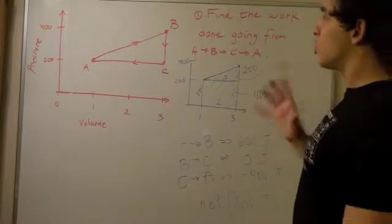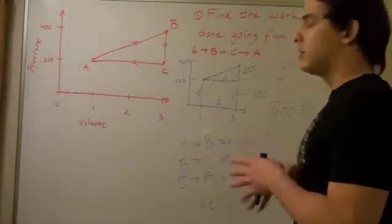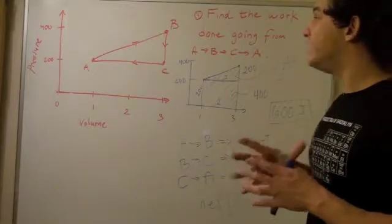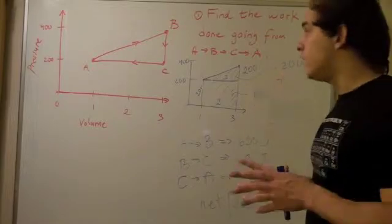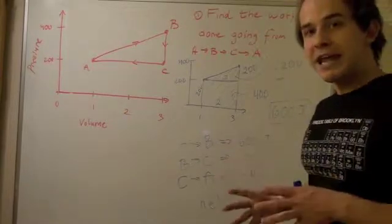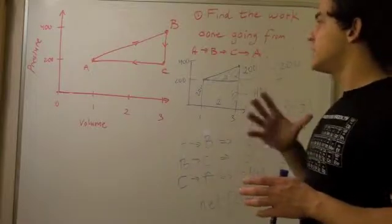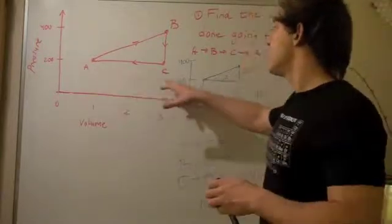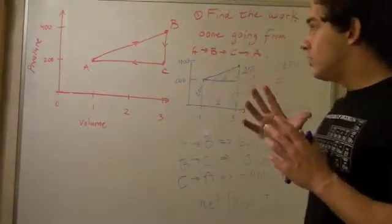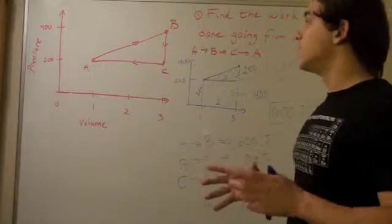So, once again, to quickly recap, when you use a graph to find the work done, first thing you have to look is for the volume change. If there is no volume change, you automatically write or assume that the work done is 0. If the pressure is constant, like from C to A, use the formula. Work equals pressure times change in volume.